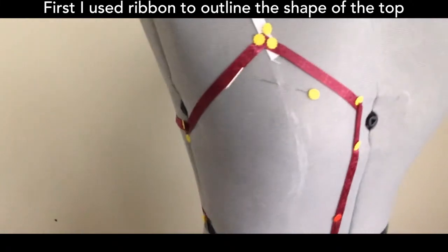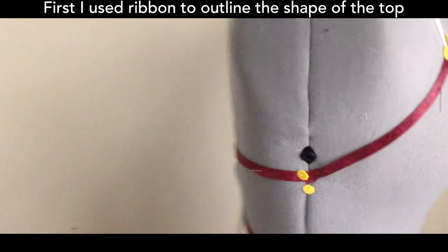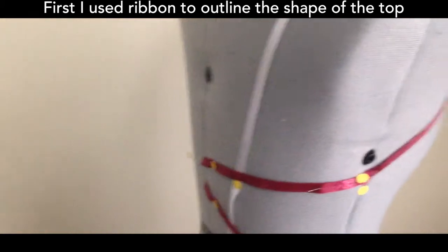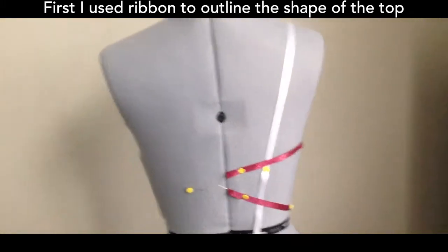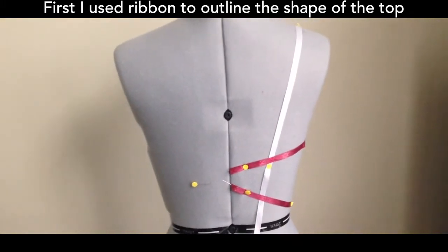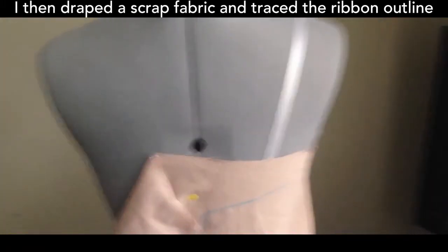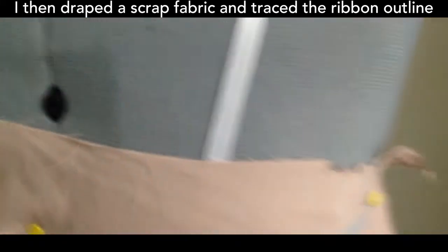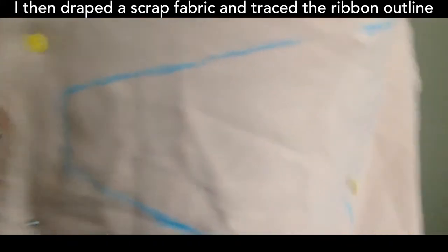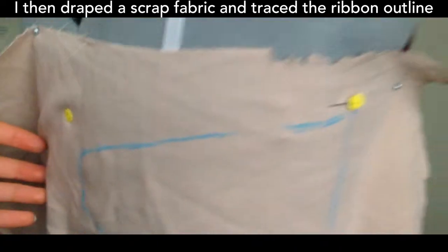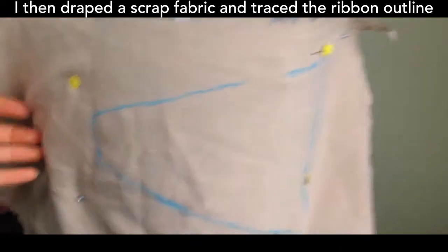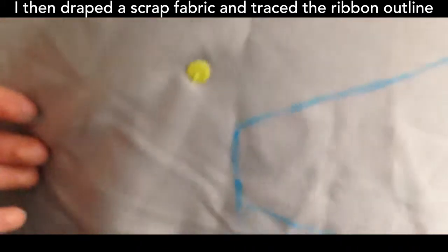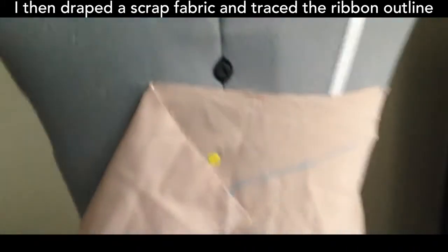Hello everyone, so today I have a crop top with the crisscross front tutorial. So here I just outlined the shape of my top with ribbon and pins, and then after this I draped some scrap fabric over it, just stuff I had laying around, and traced that and then cut it out.